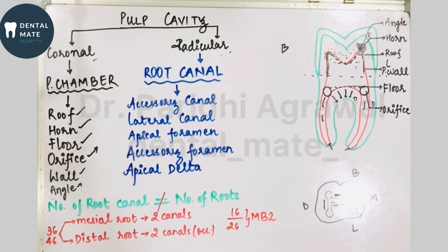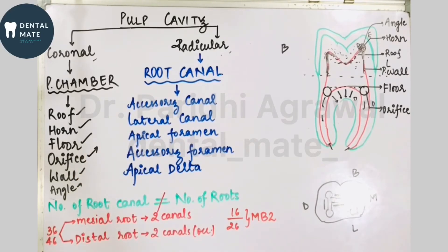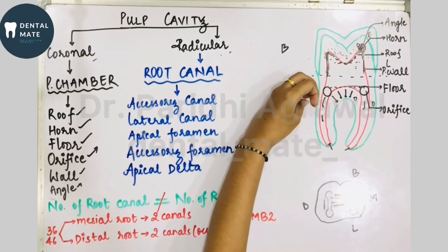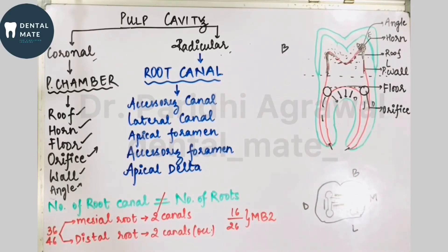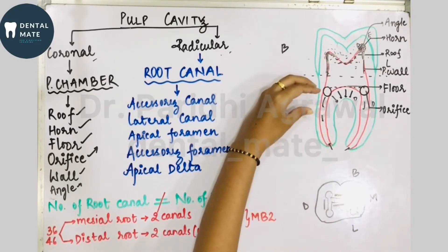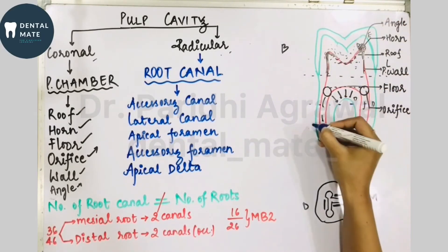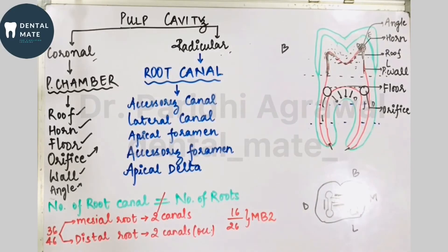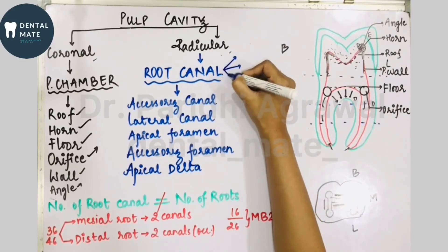The root canal is that portion of the pulp cavity that begins from the canal orifice and ends at the apical foramen. The root canal can be divided into three parts: the coronal part, which is close to the crown; the middle part; and the apical part — corresponding to how the root itself is divided into thirds.